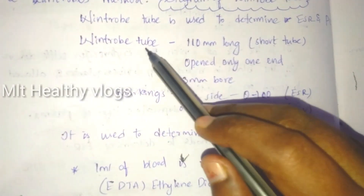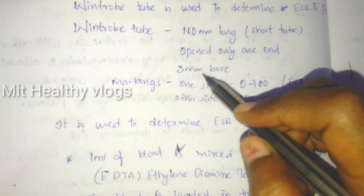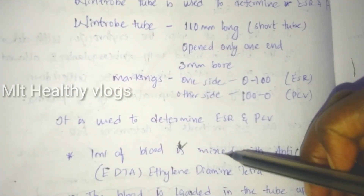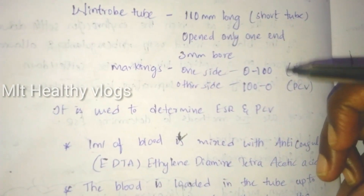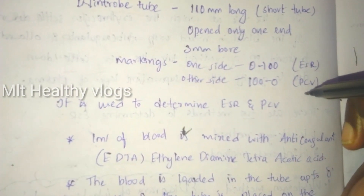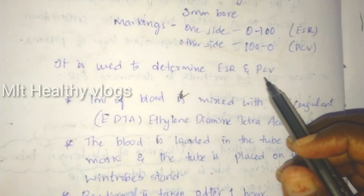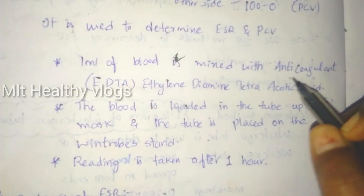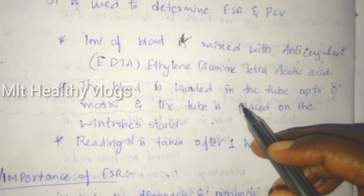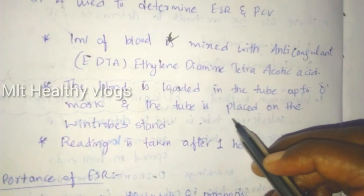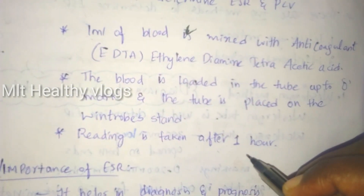For the Wintrobe method, 1 ml of blood is mixed with the anticoagulant EDTA — ethylene diamine tetraacetic acid. The blood is loaded into the tube up to the 0 mark and the tube is placed on the Wintrobe stand. Reading is taken after 1 hour.